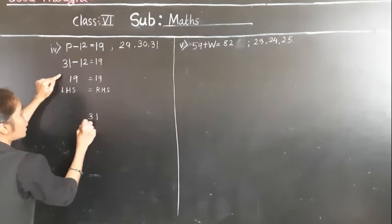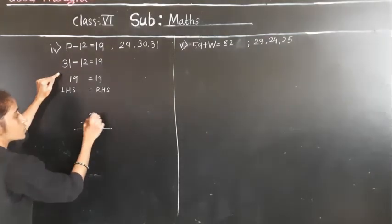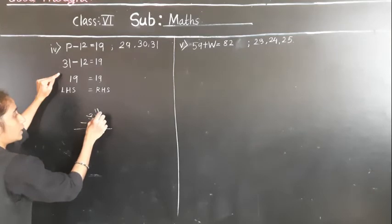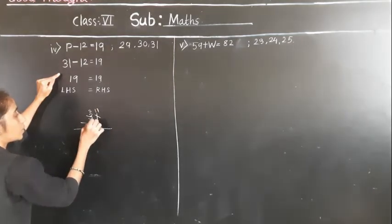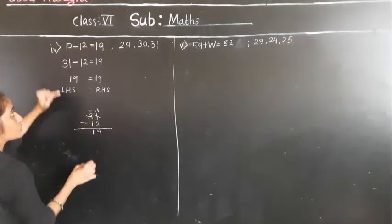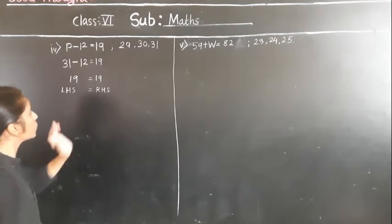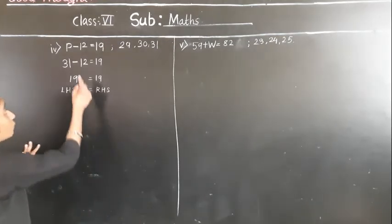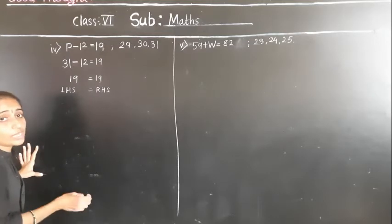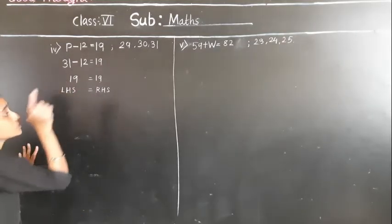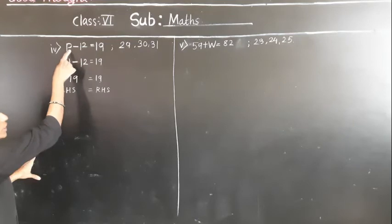31 minus 12: 1 minus 2 is not possible, so take borrow — 11 minus 2 is 9, remaining 2 minus 1 is 1, giving 19. So LHS is equal to RHS. Which value gave us LHS equal to RHS? 31.